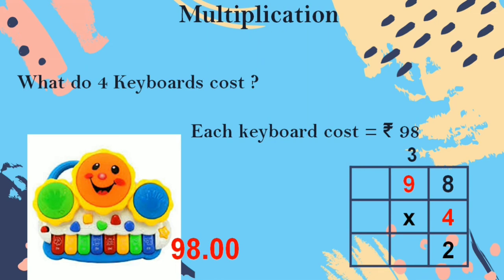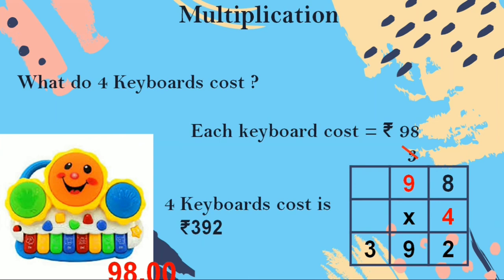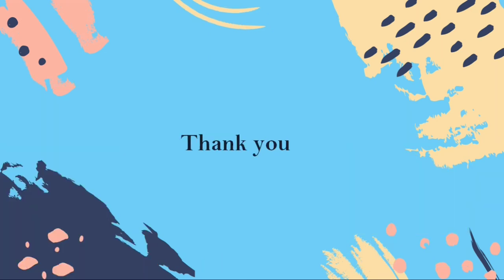Then move on to the next number. 4 nines are — say, children — 36. There is 1 number carried up, so you strike out that number and add with 36. 36 plus 3 is — say, children — 39. You take it and write 39 down. The answer is 392. The cost of 4 keyboards is rupees 392. All of you understood, children? Thank you, children.